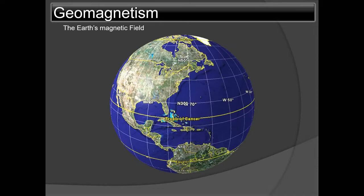A quick recap of the first video: a freely suspended magnetic needle or bar aligns itself with the magnetic lines of force at that particular place. The freely suspended magnetic bar has a north pole and a south pole — the north end is denoted by red and the south end by blue. Like poles repel and unlike poles attract, so north attracts south and vice versa.